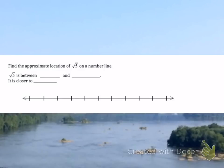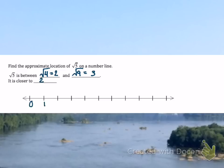Now we're finding the approximate location of the square root of 5. Since 5 is not a perfect square, the perfect square below 5 is 4, so the square root of 4 is 2. The perfect square above 5 is 9, so the square root of 9 is 3. Because 5 is closer to 4 than it is to 9, the square root of 5 is going to be between 2 and 3, but closer to 2.